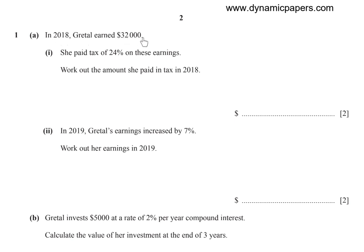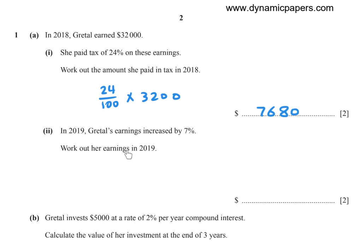In 2018, Negrittle earned $32,000. She paid tax of 24% on these earnings. Work out the amount she paid in tax. To find the amount of tax, multiply 24% by 32,000. 24% means 24 over 100, times 32,000, equals $7,680.